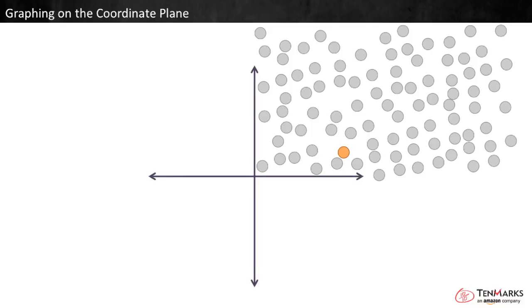Let's add these lines to break the screen into four sections, or quadrants. Now I can say the point is in the top right quadrant, and that it's closer to the horizontal line than the vertical line, but there are still a lot of points that could describe.